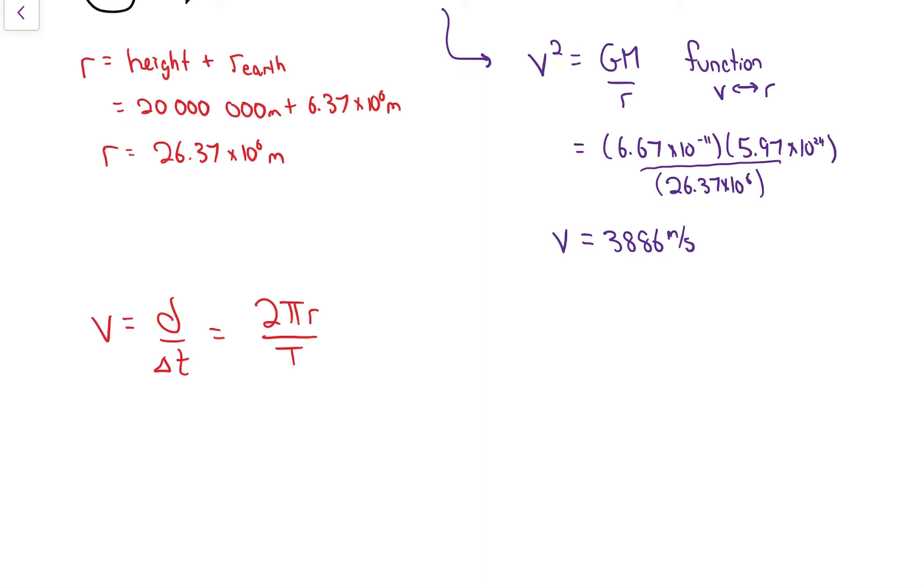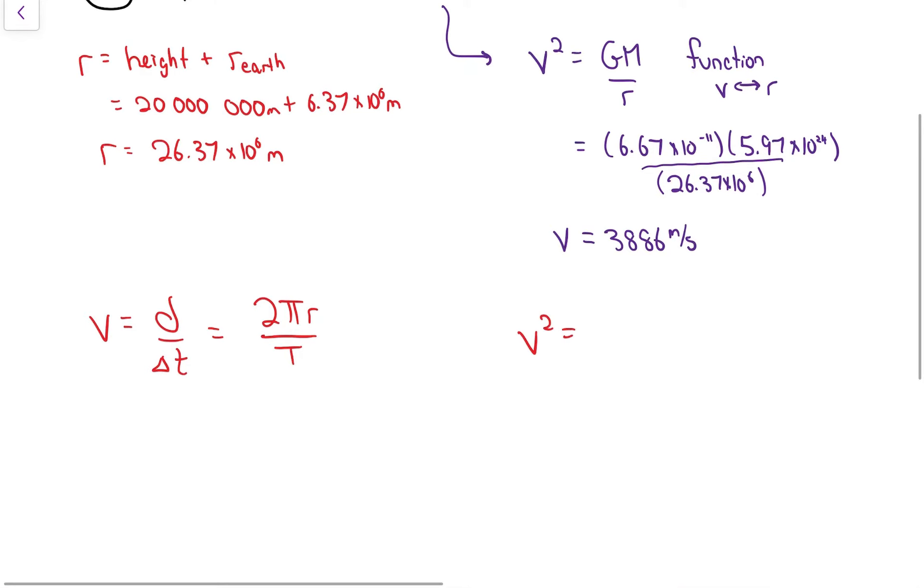Since I already know the 3886 number, I could plug that directly into 2πr over t. But just to get something cool, I'm going to go back to the v squared equals GM over r. v is 2πr over t, based on the geometry of the circle. And v squared is equal to GM over r.